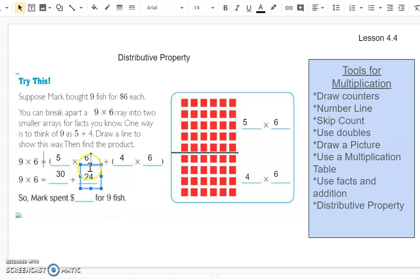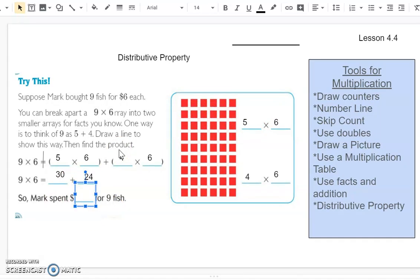24. And then I have to add these together. I have to add this section plus this section. So 30 plus 24 equals 54. So I figured out this problem by figuring out the area of rectangle one, the area of rectangle two, and then adding them together for 54. So Mark spent $54 for nine fish.